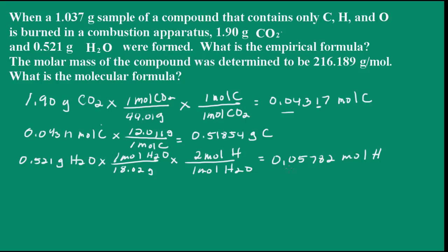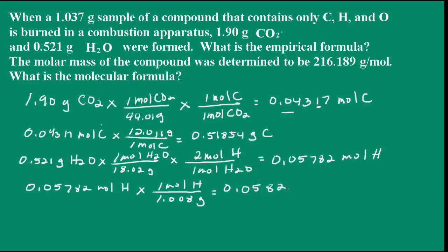Now let's also determine the number of grams of hydrogen, because we're going to need that to determine the amount of oxygen. We have 0.05782 moles of hydrogen. One mole of hydrogen is 1.008 grams. That works out to be 0.05829 grams of hydrogen.